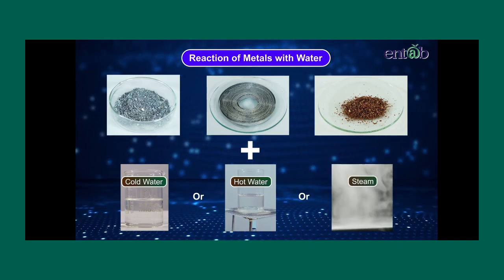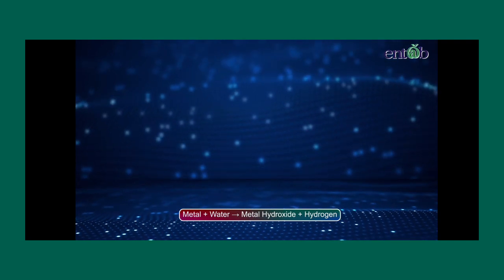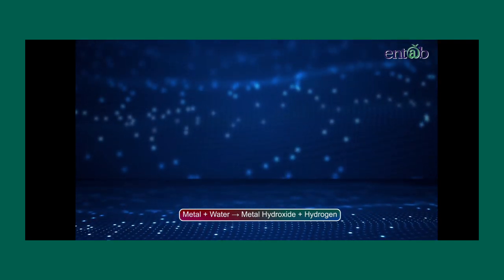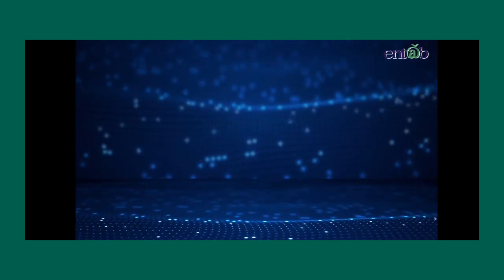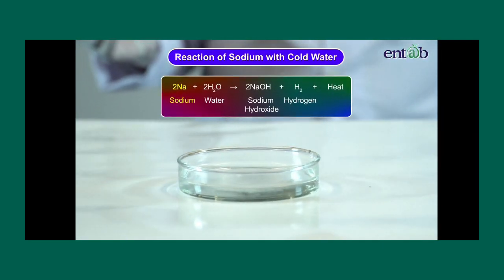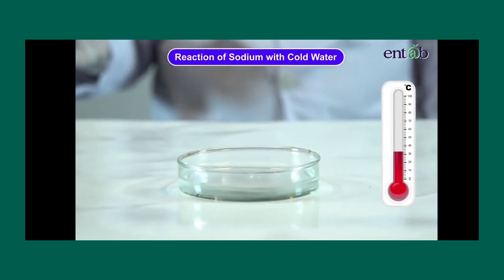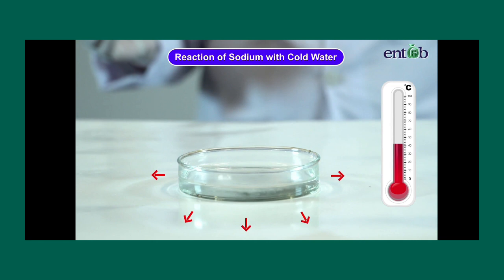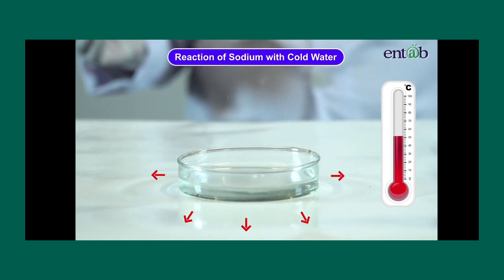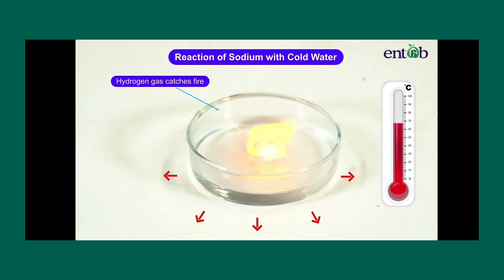Metals generally react with cold water to produce metal hydroxide and hydrogen. Let us start by observing how sodium metal behaves with water. Sodium reacts vigorously with cold water, forming sodium hydroxide and hydrogen gas. This reaction of sodium with cold water is highly exothermic, and hence the hydrogen gas produced catches fire.